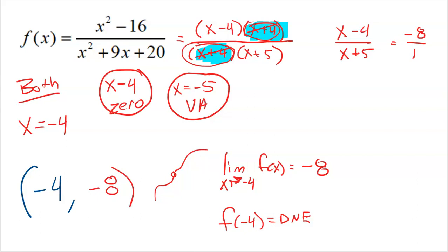One last note: holes are called removable discontinuities. The idea is that in this case the x plus fours got removed because they were the same factor on top and bottom — they reduce to one and get removed, which creates a hole. That's why holes are called removable discontinuities. It also makes sense because a hole is literally a point that you remove. They are definitely discontinuities in the graph, and they are what we call removable discontinuities.